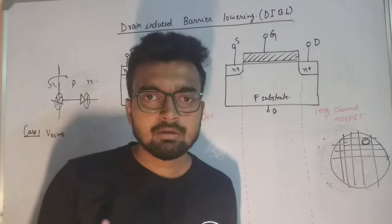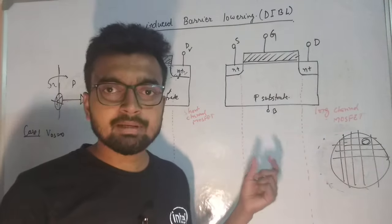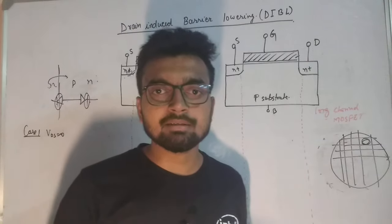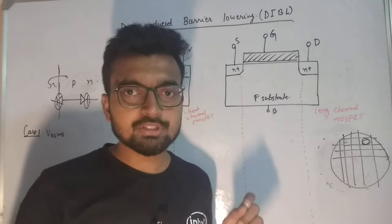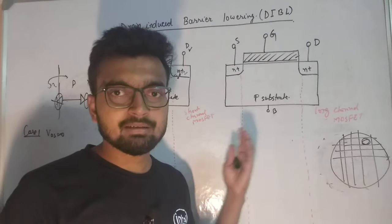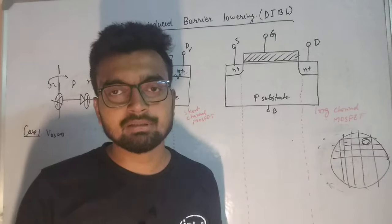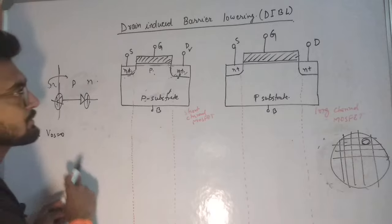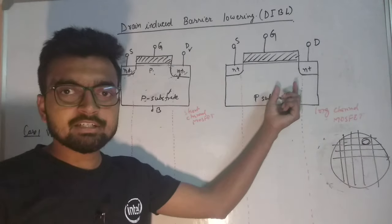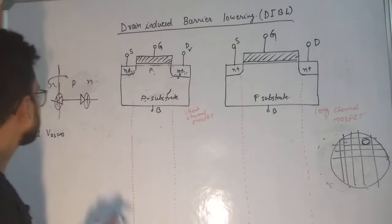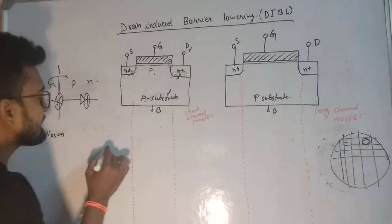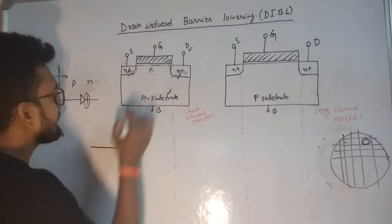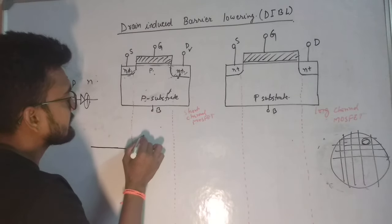In drain induced barrier lowering, there comes a time when the gate loses control over the drain current - that is the most important effect of DIBL. Initially we keep the drain potential at zero, so VDS is zero. In that case, the electron energy profile from source to drain would look like a certain curve.